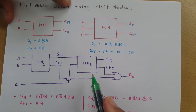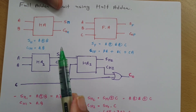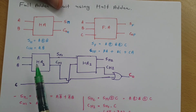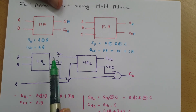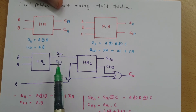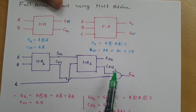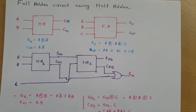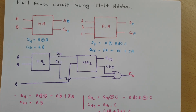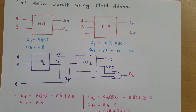So to make a full adder using half adders, all we need to do is use two half adders. With the first half adder, we give inputs A and B. With the second half adder, we give the sum output of the first half adder and the input C. Then we OR both carries from the two half adders to get the resultant carry of the full adder. That is how we can form a full adder using half adders. Thank you so much for watching. Please give your valuable suggestions so that other students can also benefit.